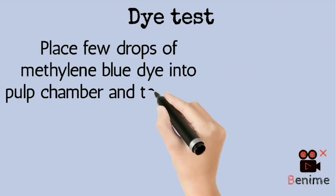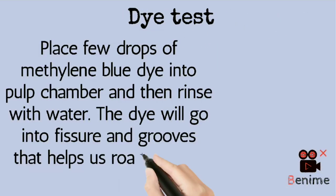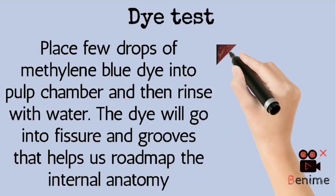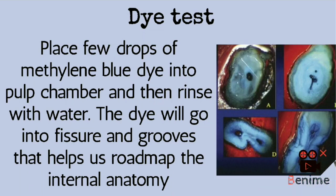Next is the dye test. Place a few drops of methylene blue dye into the pulp chamber and then rinse it well with water. You will find remnants of dye in the fissures and grooves. Follow the dye and use it as a road map to find the internal anatomy.